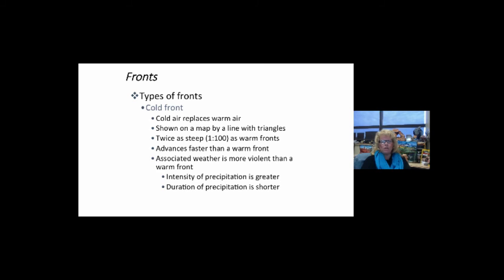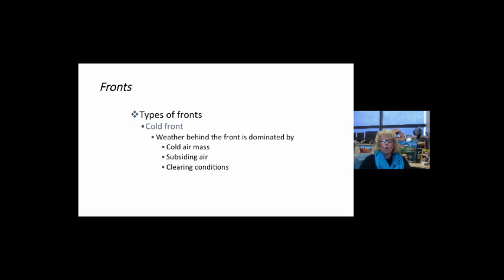Cold fronts replace warm air, drawn on a line with blue triangles. They advance faster than warm fronts and are definitely associated with more violent weather. You usually have shorter durations of precipitation, but they're much more intense. The cold air mass behind the front gets dominated by this cold air mass. It's going to have a high pressure system and clearer weather conditions. High pressure is an air mass that weighs a lot, so it's pushing down on the earth and pushes out the bad weather. With a low pressure system, the opposite is true. Low pressure is not as heavy, so air can rise and get unequal heating of the atmosphere, leading to unusual weather patterns.